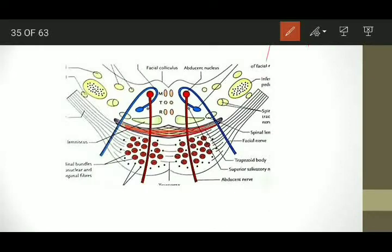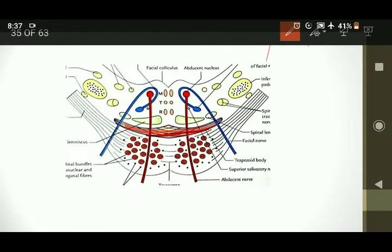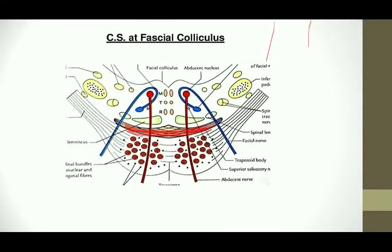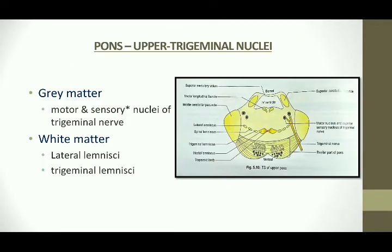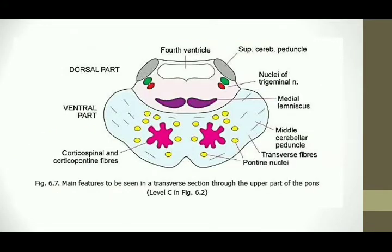In this diagram, the trapezoid body is seen more clearly. The upper part of pons, at the trigeminal nuclei level, shows the fourth ventricle clearly. The trigeminal nerve arises mainly from this section. The grey matter consists of the fifth nerve nuclei, and the white matter consists of various tracts and lemnisci.